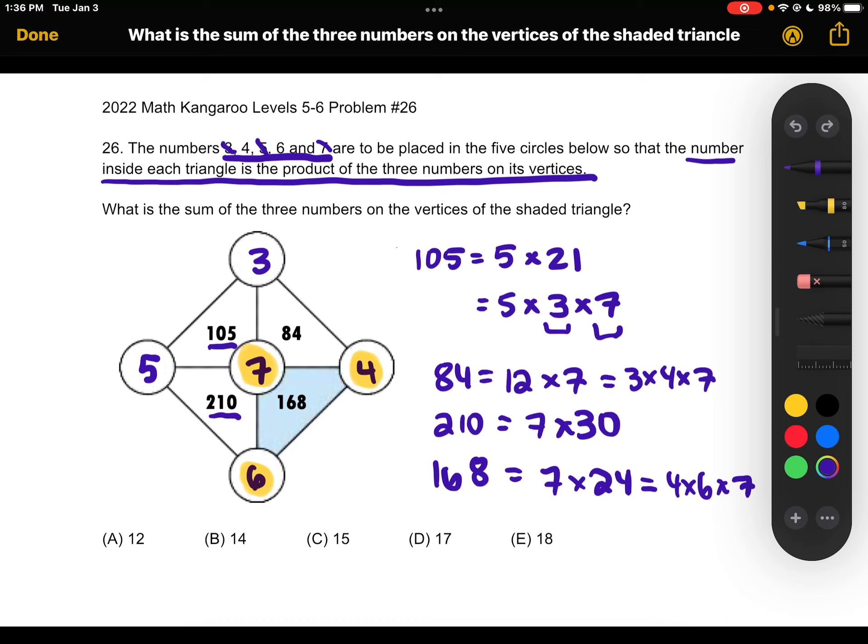7 plus 6 plus 4, which is equal to 17. And that is answer choice D. Thank you so much for watching, and please subscribe if you would like to see more videos.